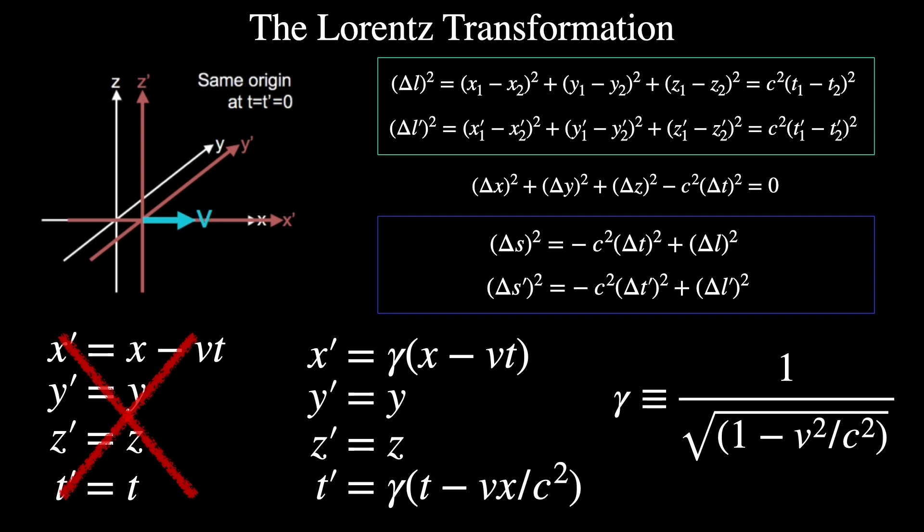Einstein did his own derivation of the Lorentz transformation for his 1905 paper, starting from his two postulates and arriving at the same set of equations you see here, all without relying on an underlying assumption of the ether or even trying to preserve it. Before we follow his derivation, we need to basically understand what the Lorentz transformation is.